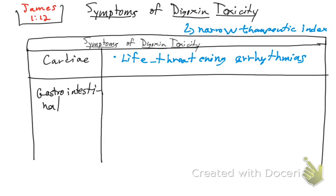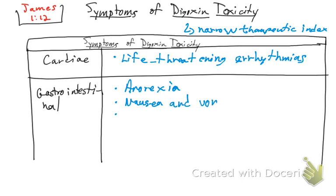What can present in the gastrointestinal system? There are three things. First is anorexia — the patient doesn't want to eat, which is not good because then the patient gets into a low energy state. The patient can also get nausea and vomiting.